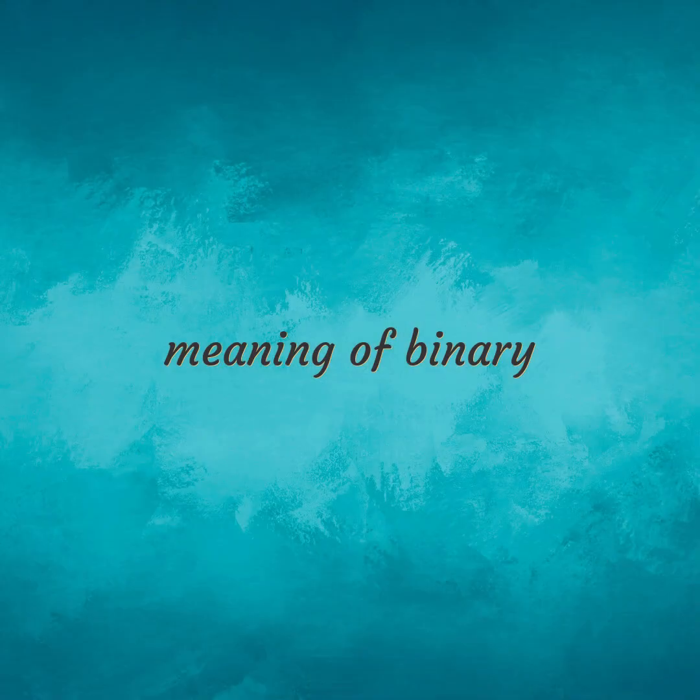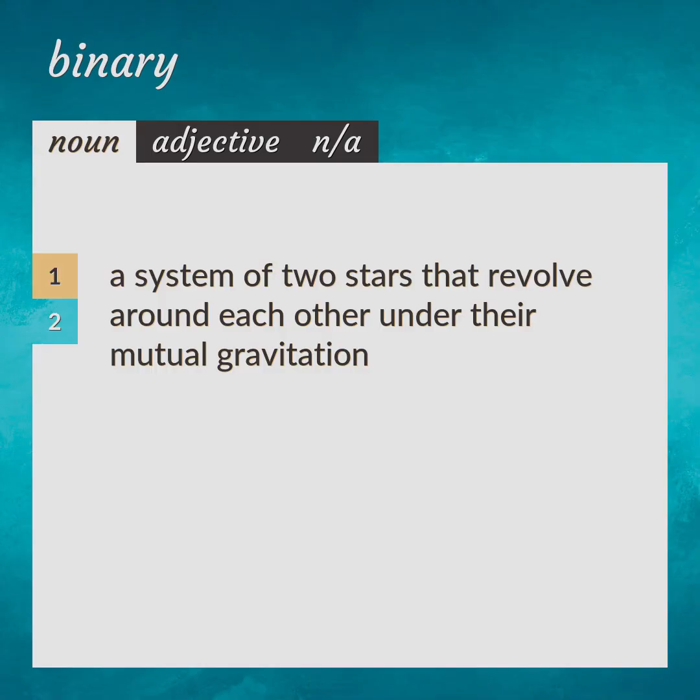Meaning of Binary. A system of two stars that revolve around each other under their mutual gravitation. Binary star, double star.